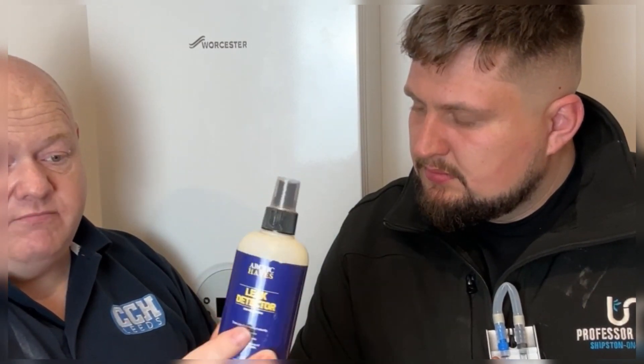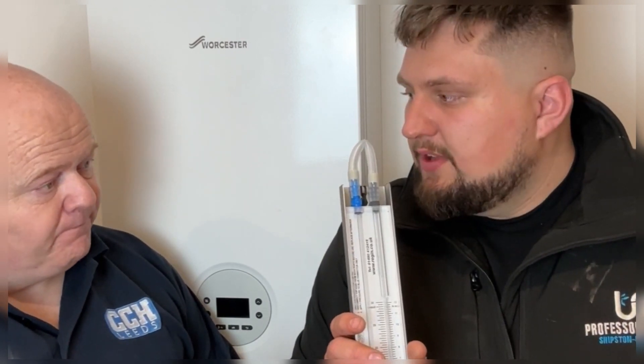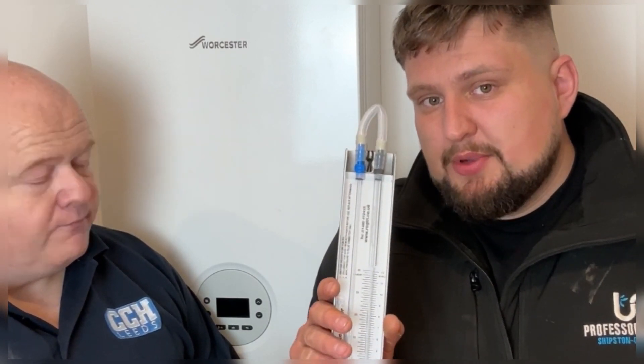One thing to point out as well is we would be using leak detector spray or liquid. We wouldn't be using like washing up liquid. We can't use washing up liquid because it can corrode the pipework. So everything has to be to manufacturer's instructions. We've got two meters today. I'm going to be using my meter. With this one you've got to make sure that you get the right fluid to put inside of it. For on camera as well, because it's blue fluid, it's going to be easier for you to see what's going on.